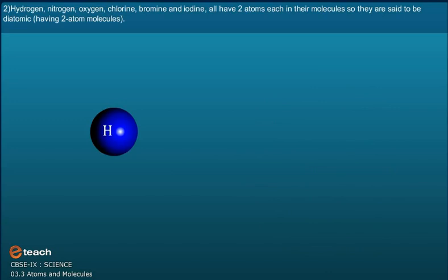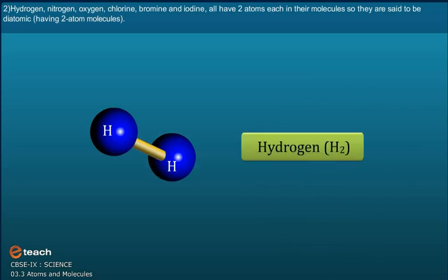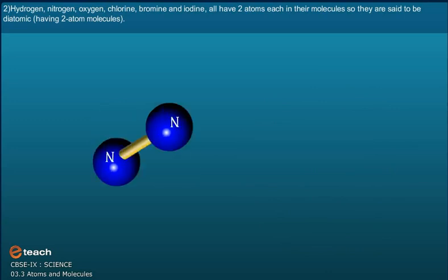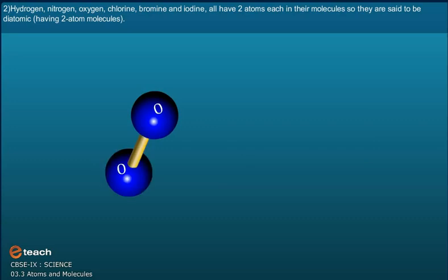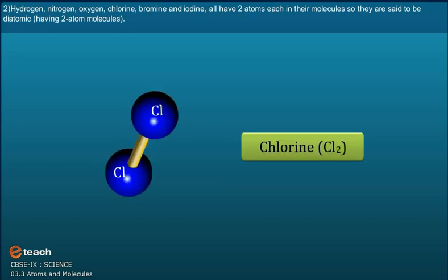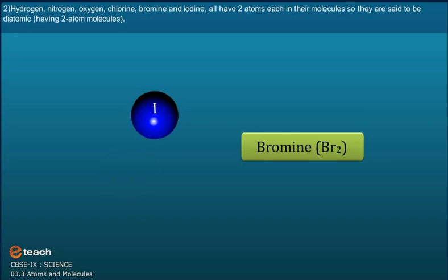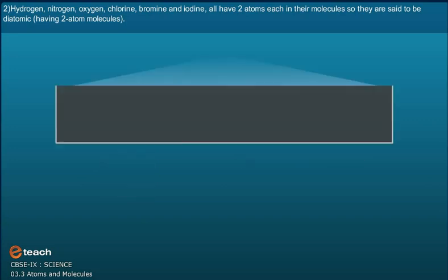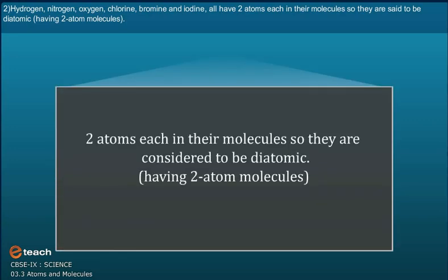Hydrogen H2, nitrogen N2, oxygen O2, chlorine Cl2, bromine Br2, and iodine I2 all have two atoms each in their molecules, so they are considered to be diatomic, having two atom molecules.